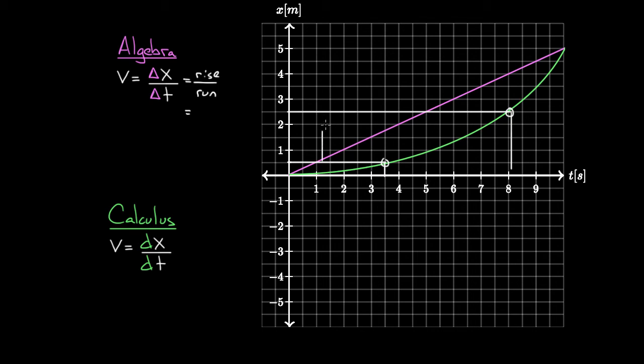I can try to use my algebra definition of the rise over run. The slope is from a half to two and a half, which is two meters, divided by three and a half to eight seconds, which is four and a half seconds, giving me about 0.44 meters per second. But here's the problem: what slope did I find? The slope was changing. It started off about like that, then got steeper, and keeps getting steeper. What I really found was the average slope between these two points. I averaged over all of these quantities and got some average slope.